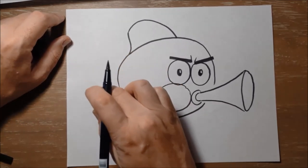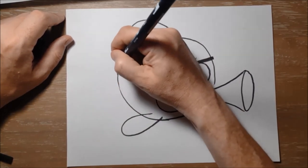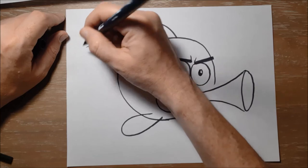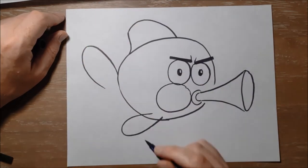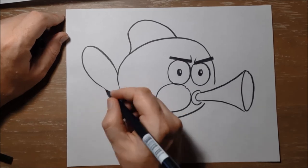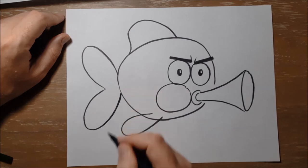And the fish has a big fin on its tail. Make a curving line, like this. And one more, like this.